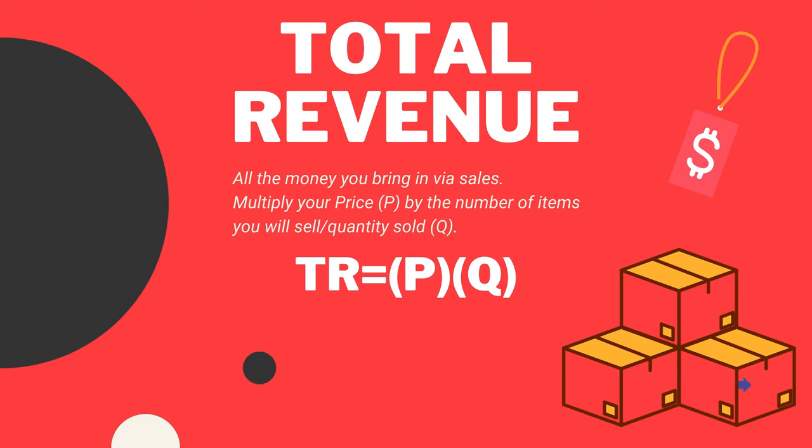The first part of the breakeven formula is total revenue — remember, TR equals TC. Total revenue is all the money you bring in through sales: multiply your price by the quantity sold. With P being your price and Q being the quantity sold, TR equals P times Q. For example, 50 cups of lemonade at $1 each gives total revenue of $50. At $5 each, total revenue would be $250.